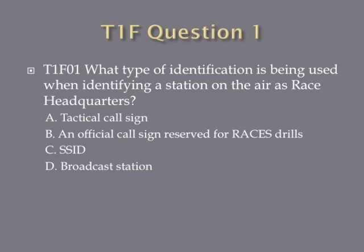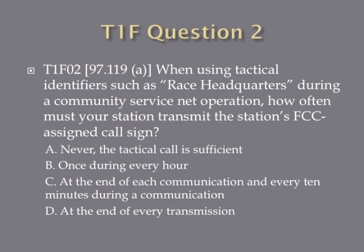Question one. What type of identification is being used when identifying a station on the air as race headquarters? A, tactical call sign. B, an official call sign reserved for races and drills. C, SSID. D, broadcast station.